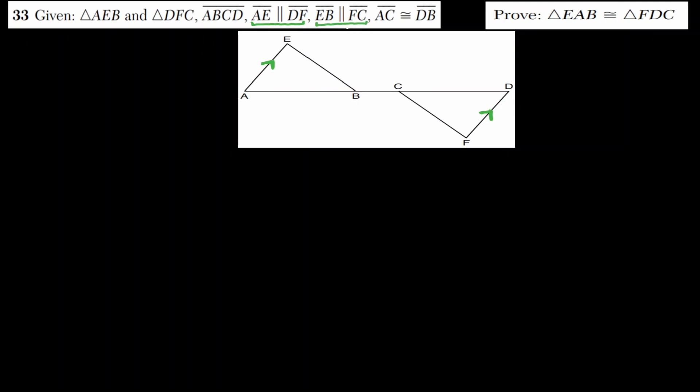In question 33, we have triangle AEB on the left and triangle DFC on the right, connected by line segment through points A, B, C, D. Line segment AE is parallel to DF, EB is parallel to FC, and AC is congruent to DB. We want to show that these two triangles are congruent.